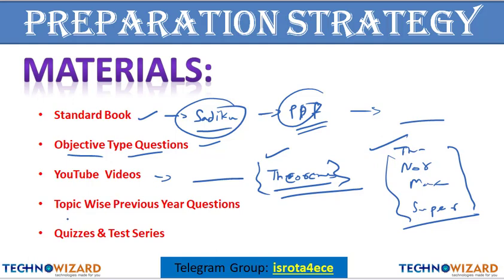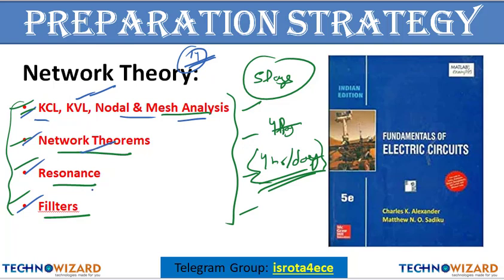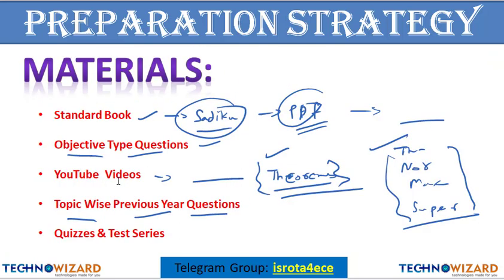Next, topic-wise previous year questions. I will provide PDFs for all four topics from the previous year question papers — around 14 ISRO papers. The first PDF will have questions on KCL, KVL, nodal and mesh analysis. The second PDF will have network theorem questions. The third will be resonance and the fourth filters. This will make your study easier — you won't have to search through full papers. I will provide these in the Telegram group.